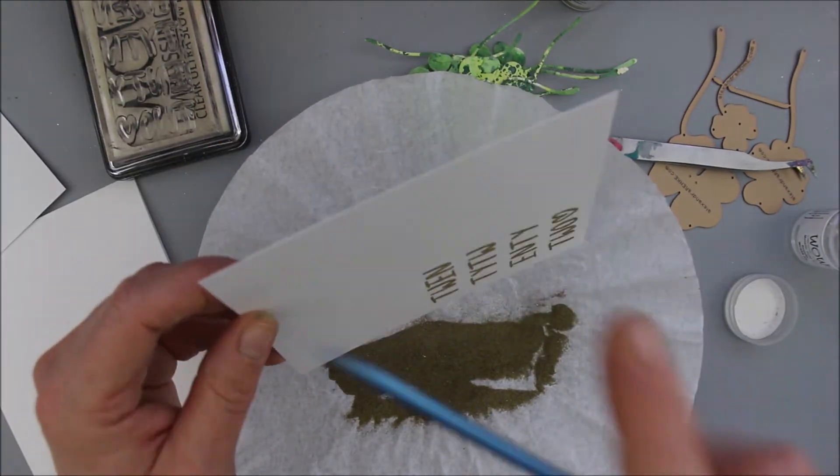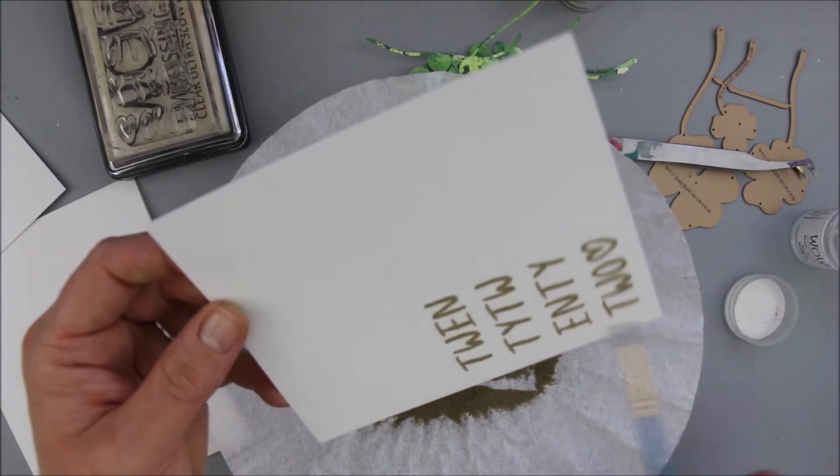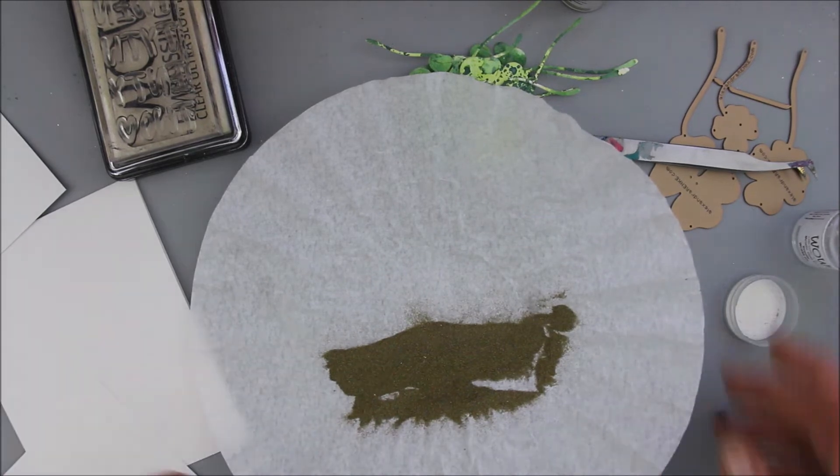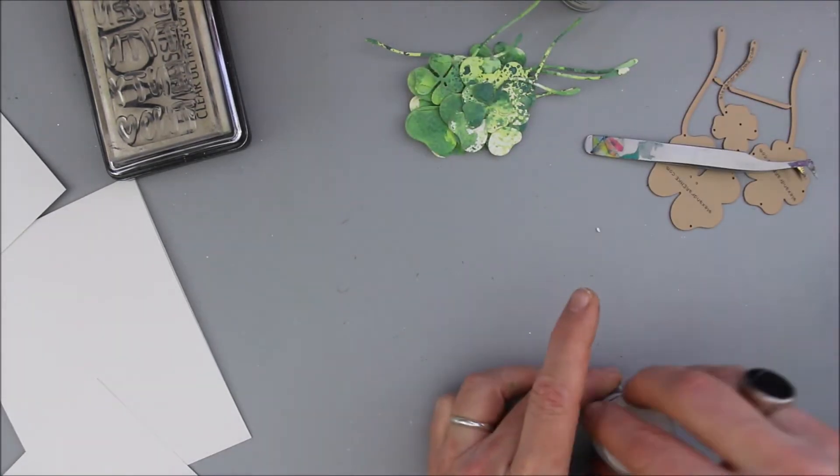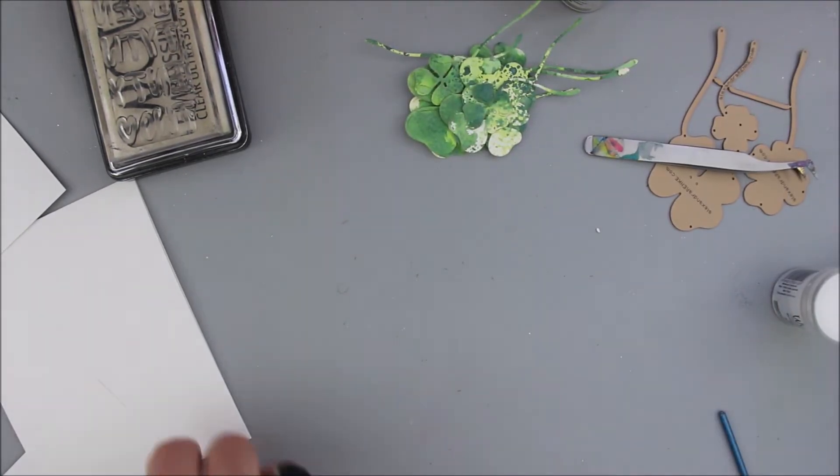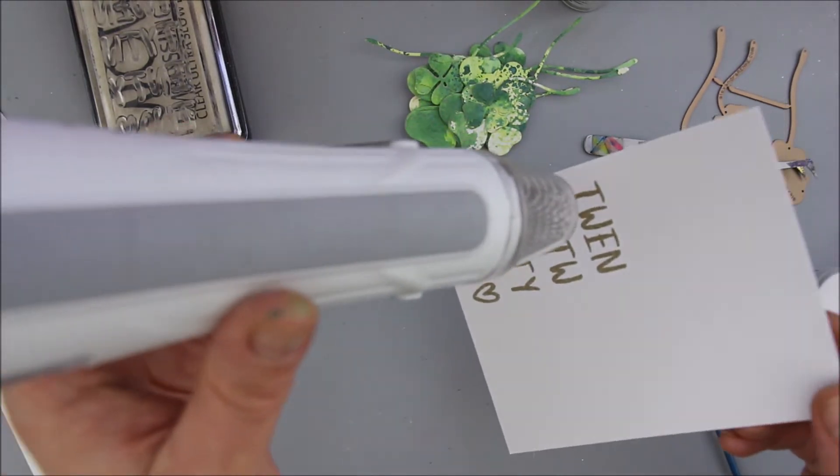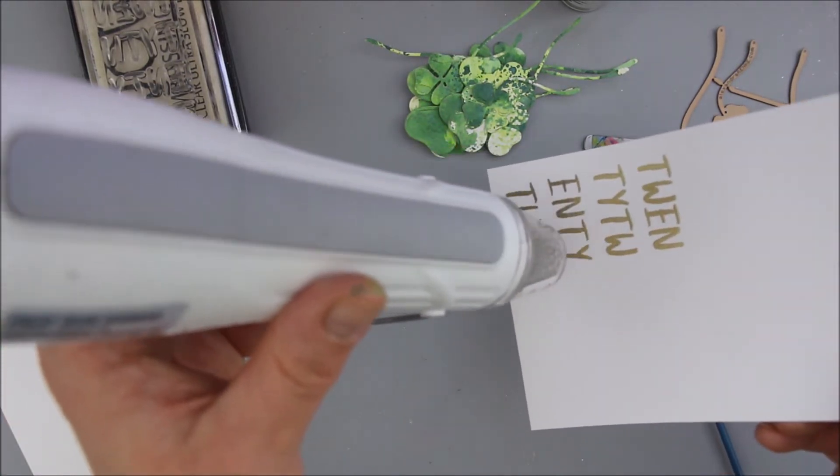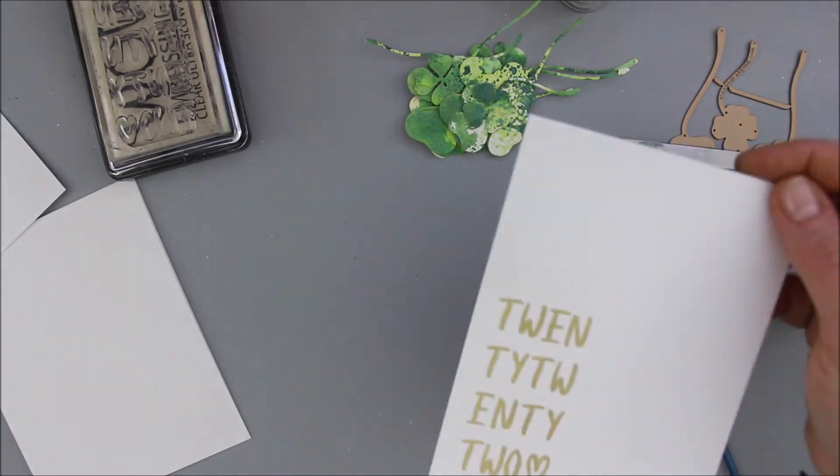I will just add this 2022 stamp by Alexandra Renke with the WOW Ultra Slow Drying Embossing Ink and pour some metallic gold rich over it. Since the design will be really clear, I tried to get rid of all these little speckles that stayed at one place on my paper, and I'm just heat-setting it.